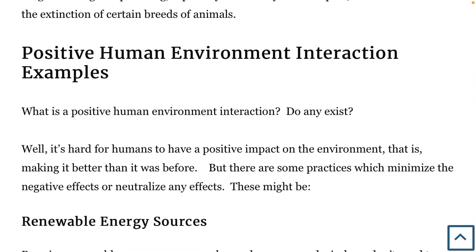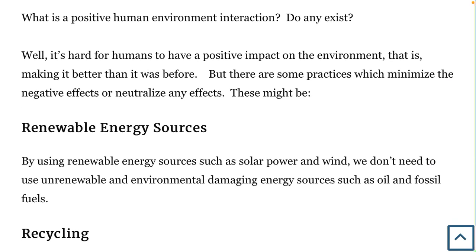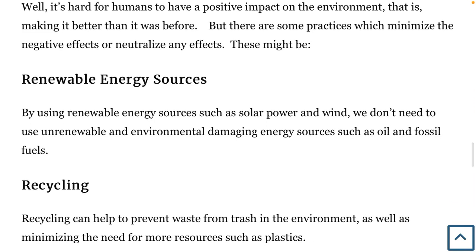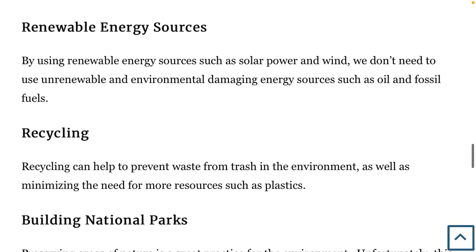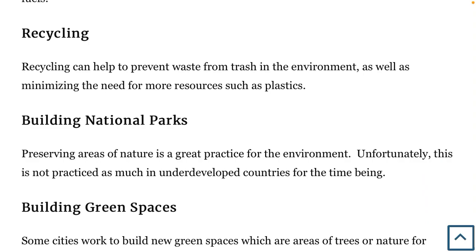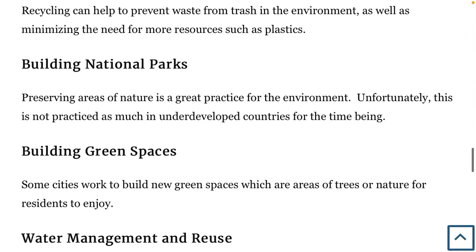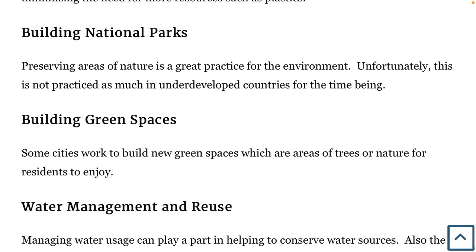Now for some positive human environment interaction examples. These are ways we can minimize or neutralize the negative effects humans have on the environment. First is renewable energy sources — by using solar power and wind energy, we don't need to use environmentally damaging energy sources like oil and fossil fuels. Recycling helps prevent waste from entering the environment and minimizes the need for resources such as plastics. Building national parks and preserving areas of nature is a great practice, though unfortunately this is not practiced as much in underdeveloped countries.